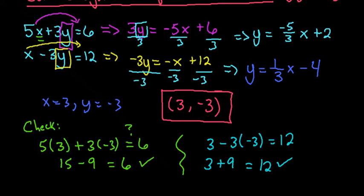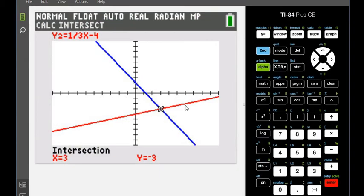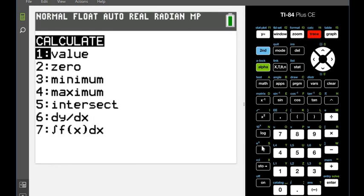Again, to find this in the graphing calculator, after you graph your lines, you do second calculate and choose option 5. Just make sure that it's somewhere on both of the lines, and then just hit enter 3 times. As always, thanks for watching.